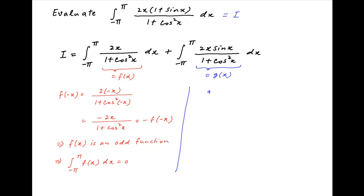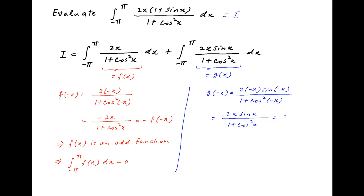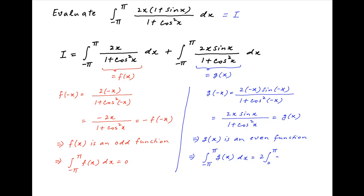Now we move on to the second component and evaluate g(-x), which is equal to 2 times minus x times sin(-x) divided by 1 plus cos squared(-x). Since sin(-x) equals minus sin x and cos(-x) equals cos x, we get g(-x) equal to 2x sin x upon 1 plus cos squared x, which equals g(x). In other words, g(x) is an even function, and therefore using properties of definite integrals, the integral from minus pi to pi of g(x) dx equals 2 times the integral from 0 to pi of g(x) dx.